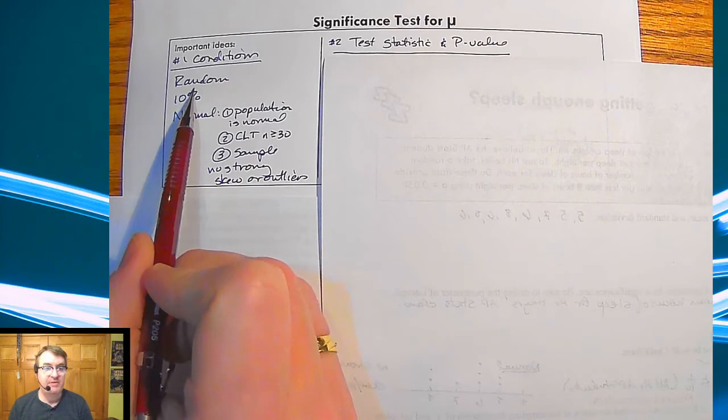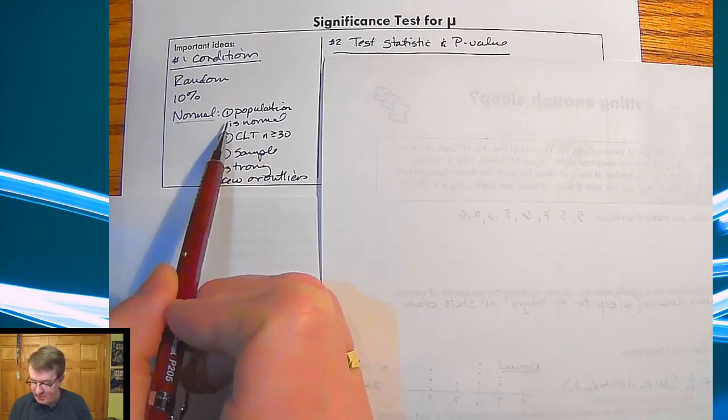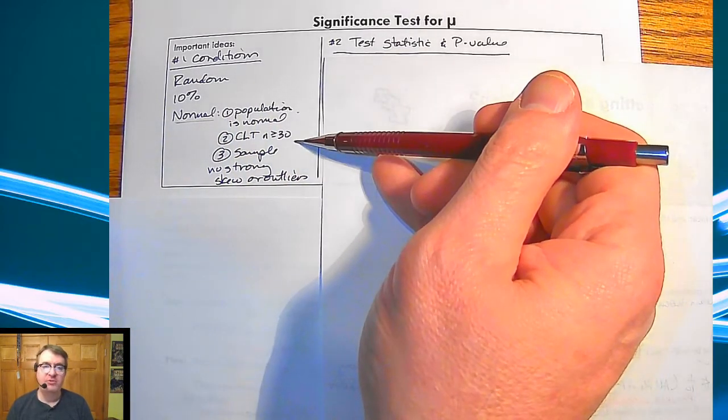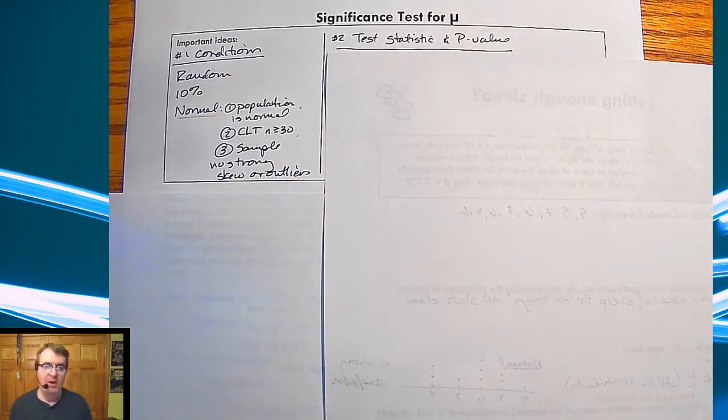Make sure that you have the conditions right. So you need to have them random, you need to hit the 10% rule, and you need to make sure that you're checking for normality. Remember that's either coming from population as being normal, you have the central limit theorem, or when you look at your sample there's no strong skew or outliers.